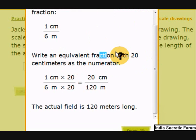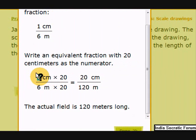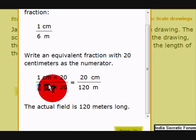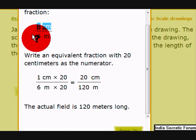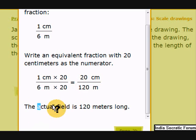Now write an equivalent fraction with 20 centimeters as the numerator, because the soccer field is 20 centimeters in the drawing. We put 20 centimeters on the top and multiply both the numerator and the denominator by 20. So 20 centimeters is equivalent to 120 meters, because 6 meters times 20 equals 120. The actual field is 120 meters long.